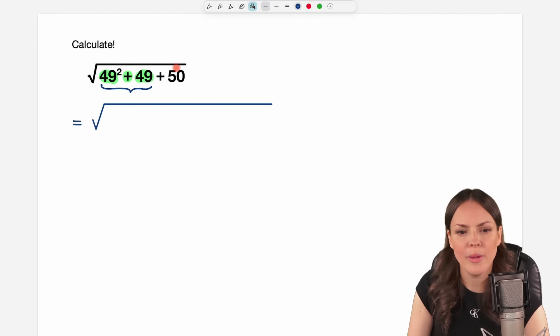We have our big square root. We have the plus 50 here at the end. We will take care of this later. Now I want to factor out a 49. I'm going to make it green. And what is left in my parentheses then? I had a plus here in between, so I'm going to have a plus here as well. And from the first part, the 49 squared, if I factor out a 49, what is left here then?